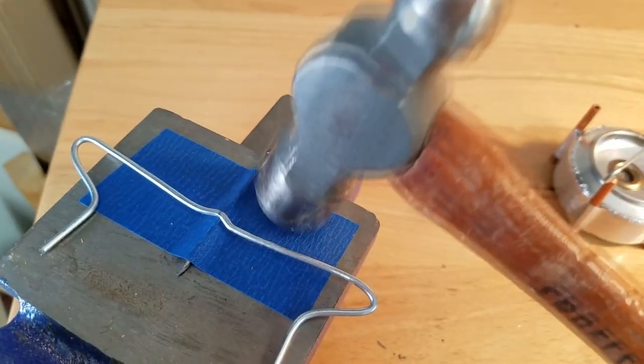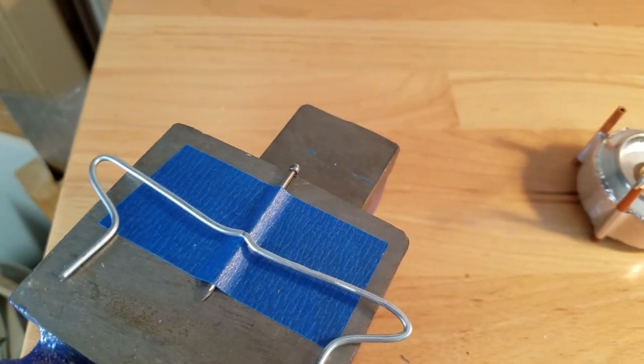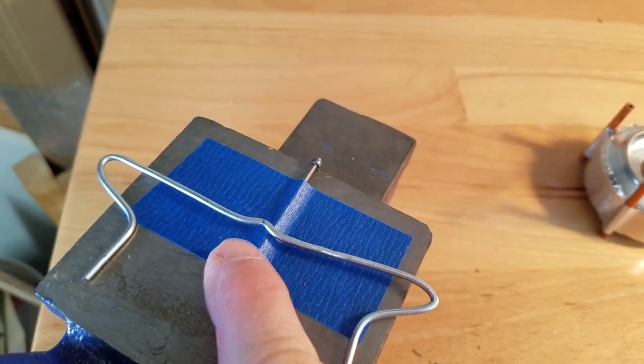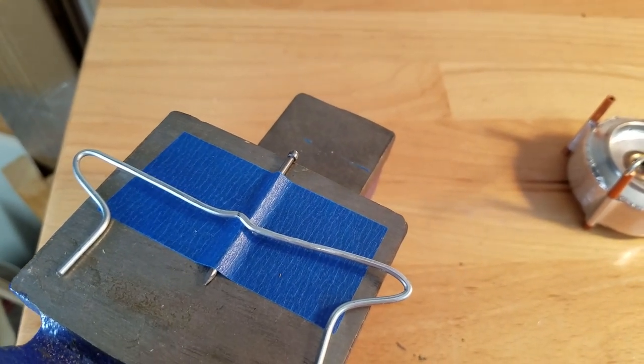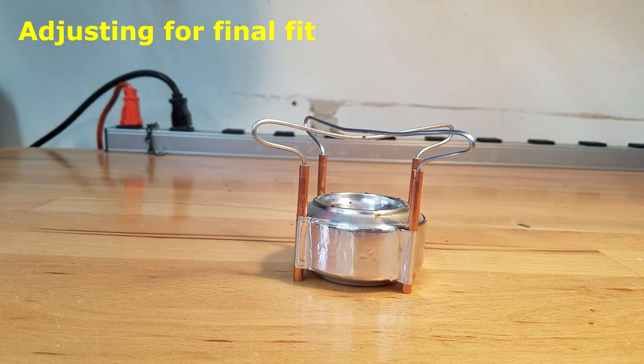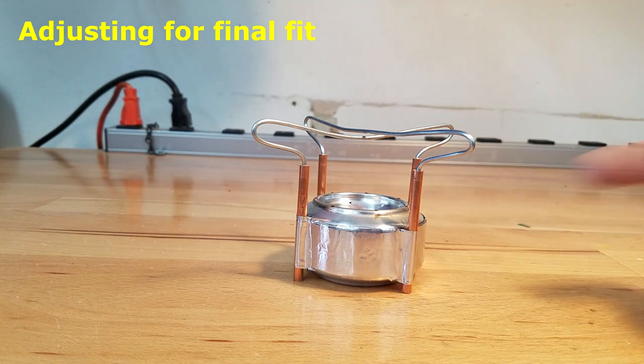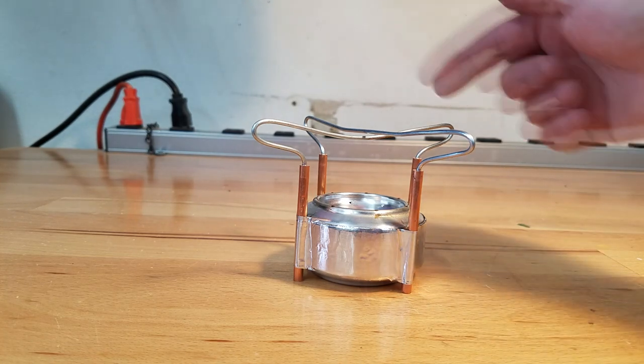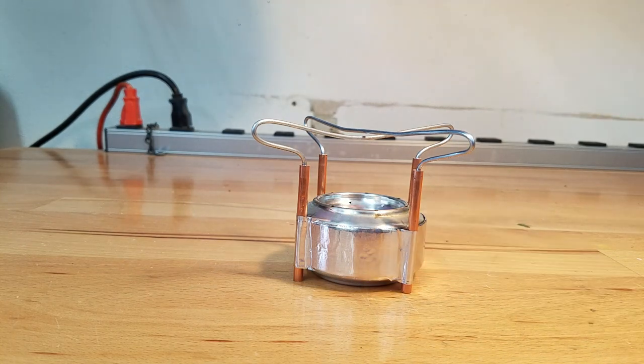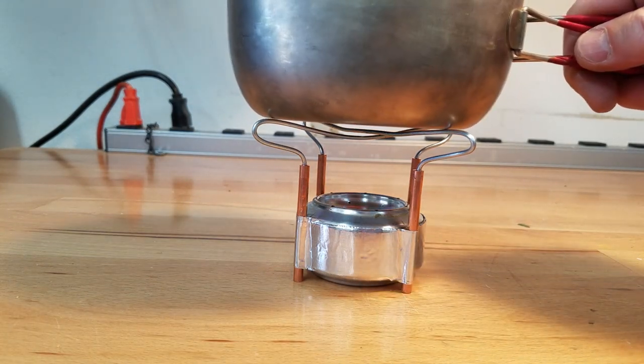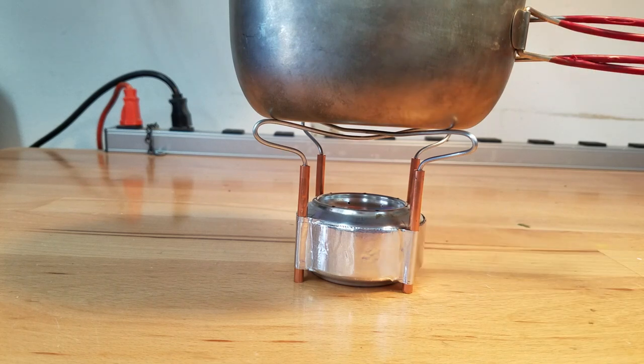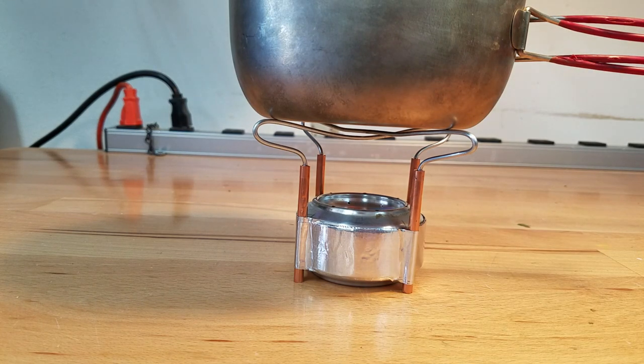Once you've inserted the wire into the copper legs, you may have to do some adjustment by bending it with your hands to ensure the four sides touch the bottom of the pot. That way it's going to sit pretty level when you boil your water or cook your food.